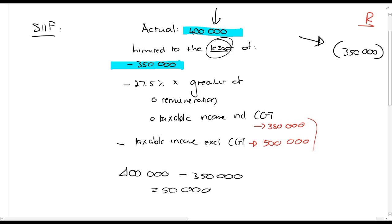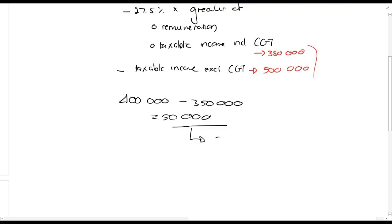That 50,000 rands is a contribution disallowed. If I bring this up, you might think you know what to do with it - add it to Section 11F next year or deduct it against the lump sum or use Section 10C for annuities. Now there's three different places to use this amount. What do we do?